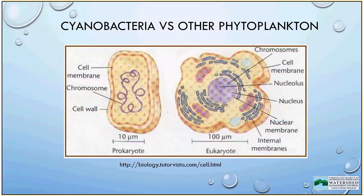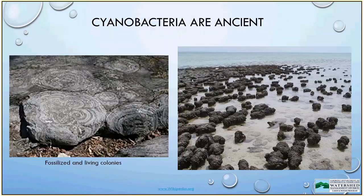The name cyanobacteria is the more scientifically accurate term for these organisms because they are prokaryotes, more like other bacteria in their internal organization. They have no internal organelles — no membrane-bound organelles, no nucleus, no chloroplast. This is in contrast to other algae, which are eukaryotes, meaning they do have chromosomes, nuclei, and membrane-bound chloroplasts.